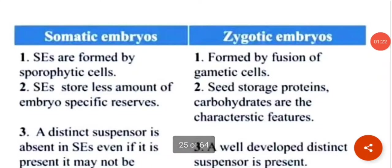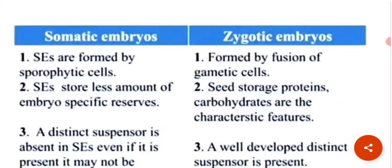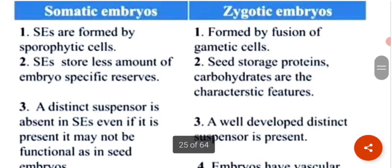What are the major differences between somatic embryos and zygotic embryos? Somatic embryos are formed by sporophytic cells, whereas zygotic embryos are formed by the fusion of gametes. Somatic embryos store less amount of embryo-specific reserves, while zygotic embryos have seeds, storage proteins, and carbohydrates as their characteristic features.